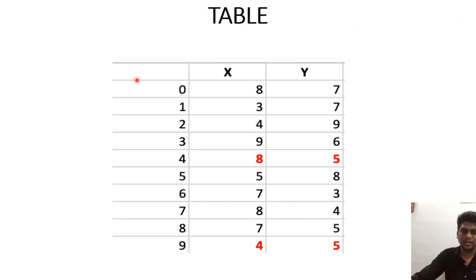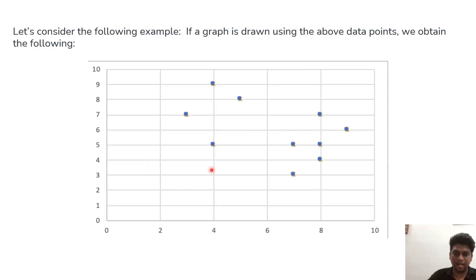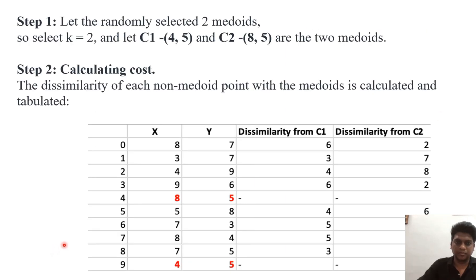Example. Here points are from 0 to 9 and they are represented in x and y. Here we have select 2 points 8 and 5 and 4 and 5. Plot the graph for the data point. The algorithm. First we have to randomly select 2 Medoids. Here we are selecting this 8,5 as one of the Medoid and 4,5 as one of the Medoid.